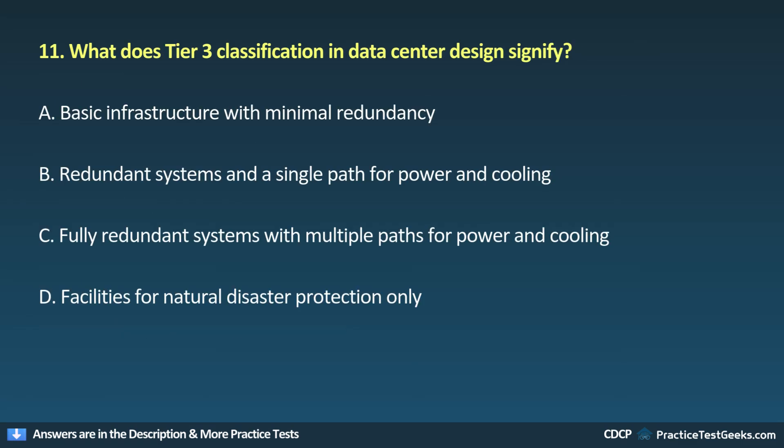Question 11. What does Tier 3 classification in data center design signify? A. Basic infrastructure with minimal redundancy. B. Redundant systems and a single path for power and cooling. C. Fully redundant systems with multiple paths for power and cooling. D. Facilities for natural disaster protection only.